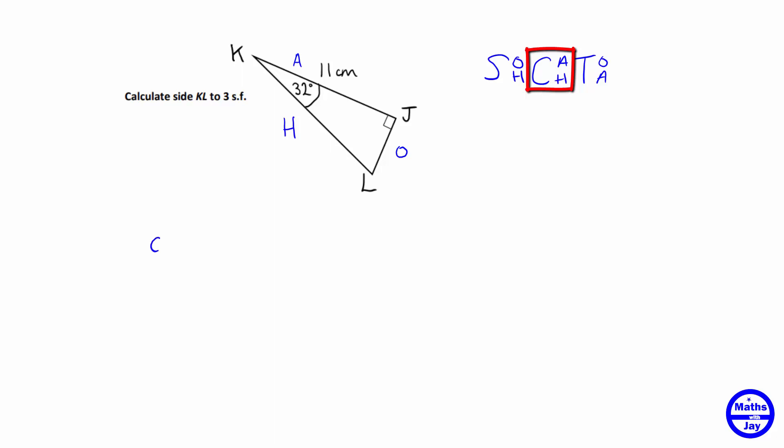So we've got the cosine of that angle 32, so the cosine of 32 degrees is the adjacent side divided by the hypotenuse. So that's 11 divided by the side that we're trying to find, so that's KL.